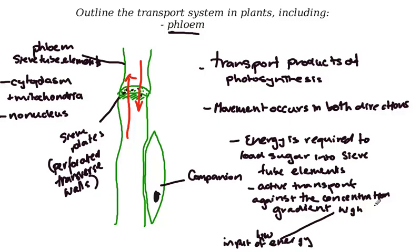In summary for phloem: phloem has a number of tissues associated with it. There are companion cells, which have a nucleus and help to support the activities of the sieve tube elements. The sieve tube elements, unlike xylem tissue, are not continuous — they have sieve plates, which are perforated transverse walls that allow the movement of products of photosynthesis from where they're being produced to where they're going to be stored. Energy is required because movement is against the concentration gradient, from a low concentration of sugar to a high concentration in the storage area.